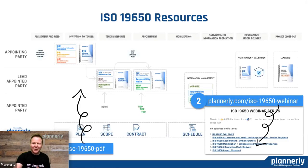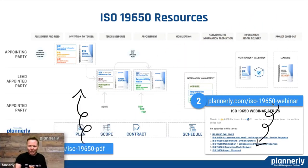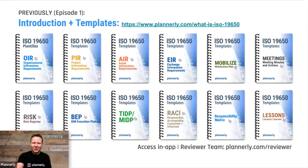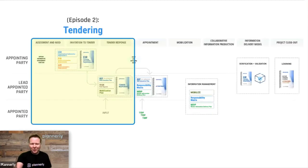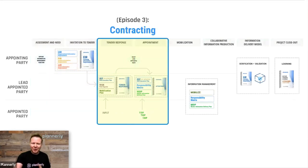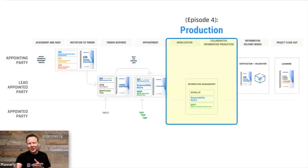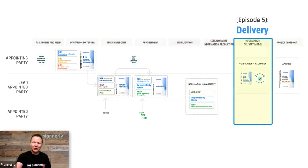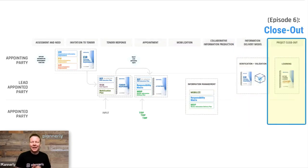We've got a few resources to share with you. The first is access to these diagrams that we've been using throughout the webinars — you can find them on this link. All of the webinars in this series are recorded and available on this webinar page. The previous episodes: episode one looked at templates and how to use those to kickstart the process; episode two was how to use those to tender, creating exchange information requirements; episode three was about contracting with responses going to appointment documentation; that contract then goes to production, creating deliverables, QAing, and making sure you get the delivery of the right information. And then episode six today was about closing out the project.